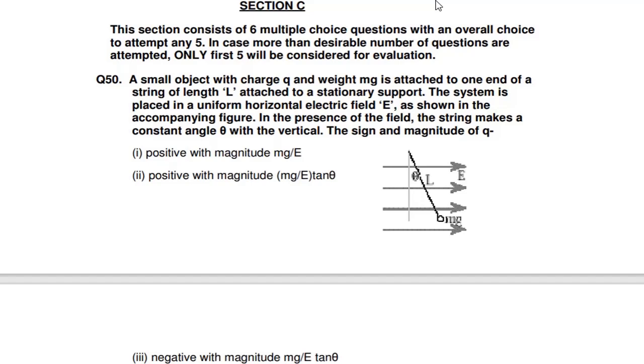Question number 50: A small object with charge q and weight mg is attached to one end of a string of length L to a stationary support. You can see a thread is there, a string is there. The system is placed in a uniform horizontal electric field.